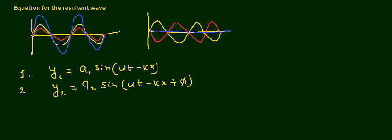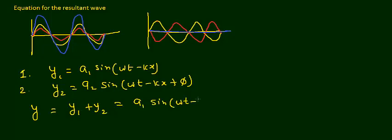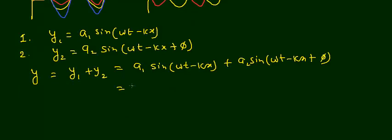Wave 1 has amplitude a₁ and wave 2 has amplitude a₂ — the amplitudes are different. We are also assuming there is a phase difference φ between the two waves. To get the resultant wave, I will add these two waves — take the vector sum. So y = y₁ + y₂ = a₁ sin(ωt − kx) + a₂ sin(ωt − kx + φ).